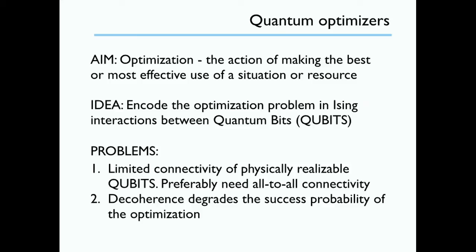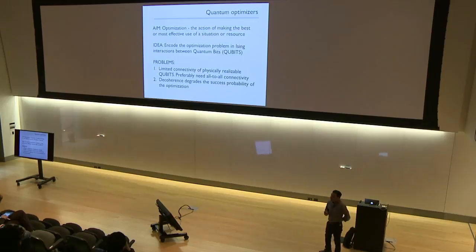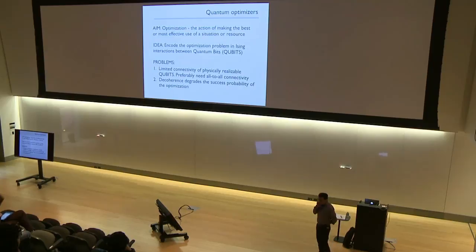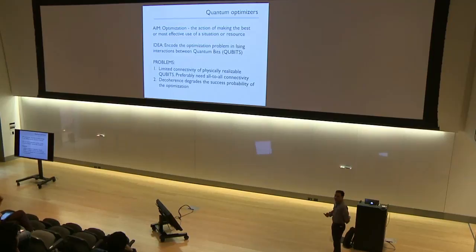The second biggest problem facing quantum optimization is decoherence. Decoherence simply degrades the quantum correlations. So if there is any quantum speedup in doing the computation using quantum annealing, this probability of the computation will be degraded if there is decoherence, because the quantum correlations which are giving rise to the speedup will get destroyed.